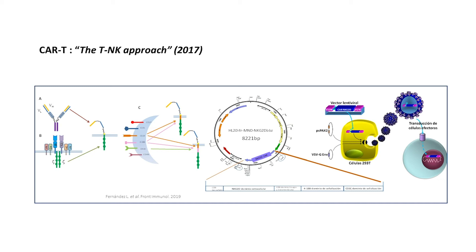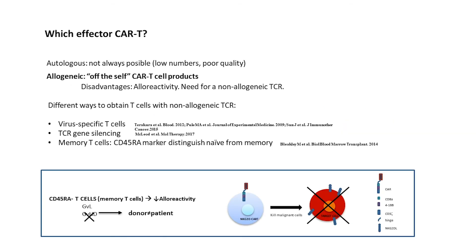We used the conventional CD19 CAR construct as a backbone and introduced the NKG2D receptor. We produced lentiviral particles and performed transductions, but our transduction was performed in a specific subset of T cells. We were aware of autologous CAR T cells but wanted to move to the allogeneic field because it is faster and can be used off-the-shelf — however, you must control alloreactivity and the risk of GvHD. For this, you can block the TCR, do gene editing, or use effector T cells with less alloreactivity.